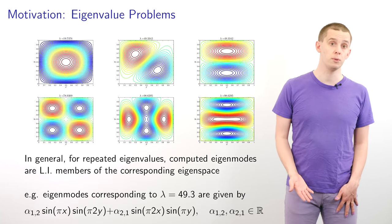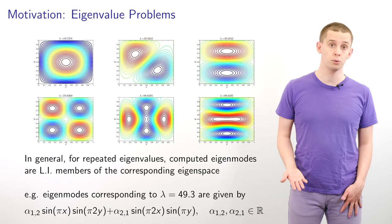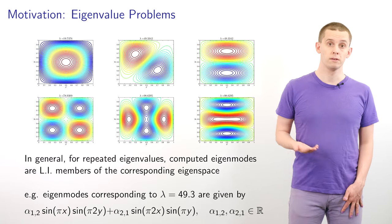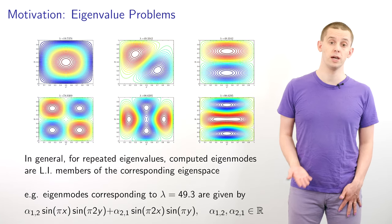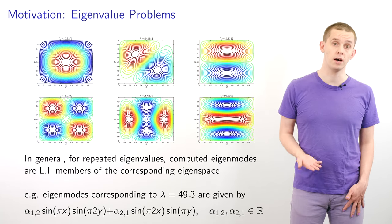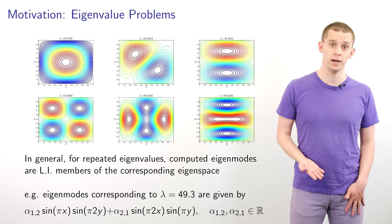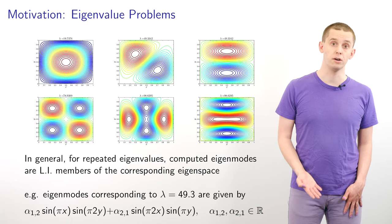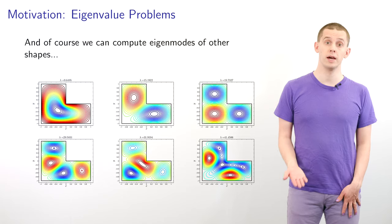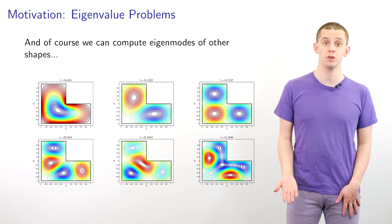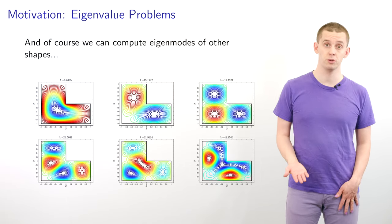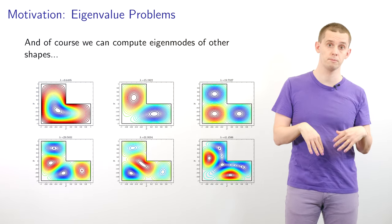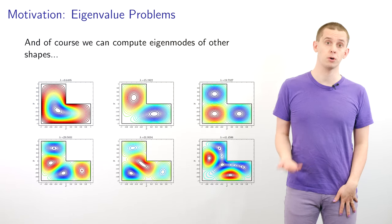It's worth noting that in this example there are some repeated eigenvalues. The numerical routine will return various linearly independent members of the corresponding eigenspace. For example, for lambda equal to approximately 49.3, we get back eigenvectors in the eigenspace spanned by a function with two free parameters alpha_{1,2} and alpha_{2,1}, each with a corresponding product of sine terms. We can use the same methods to compute eigenmodes for different shaped domains — here I'm showing six eigenmodes for an L-shaped domain. The lowest frequency eigenmode again corresponds to a vibration where the entire surface oscillates backwards and forwards, and the next eigenmodes correspond to more complicated oscillations of the drum surface.